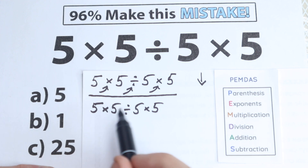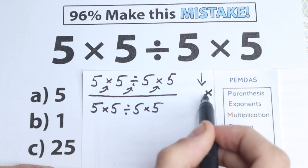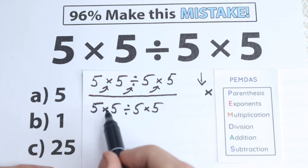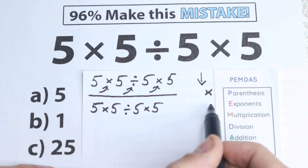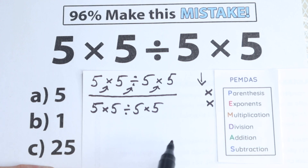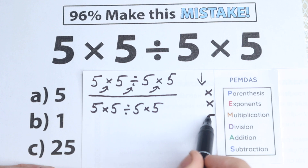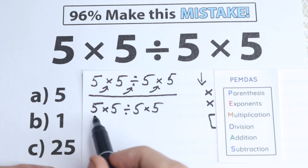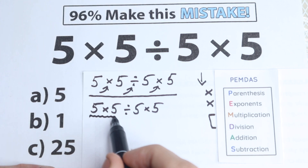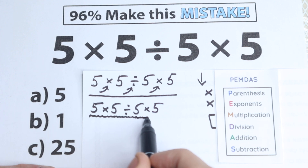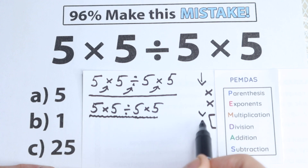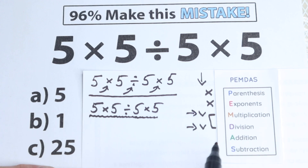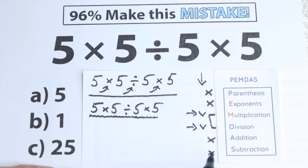I don't see any parentheses, so we skip this part. For exponents — squares, cubes — I don't see any of those either, so we skip that part as well. The next step is multiplication. According to PMDMC, multiplication and division are one group. We need to scan where we have multiplication and division signs. Right here we have a multiplication sign, then division, then multiplication again — so all the time we have the multiplication and division group. We don't have any addition or subtraction.